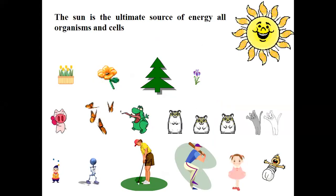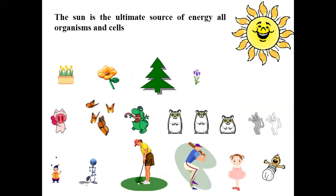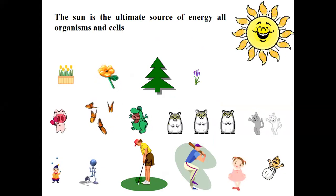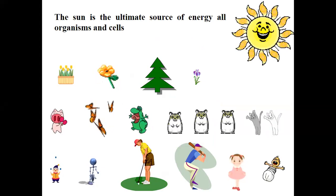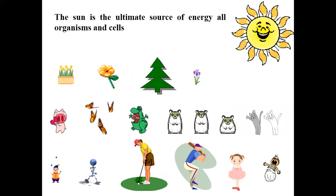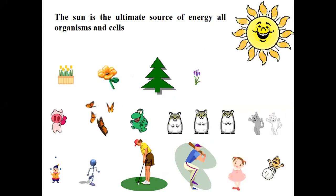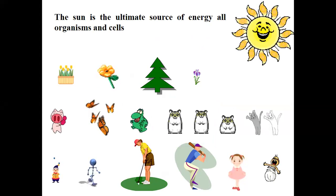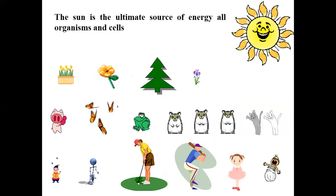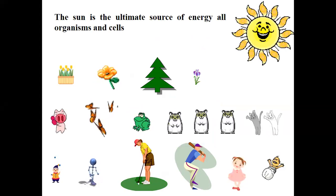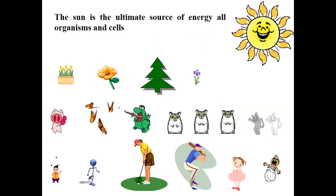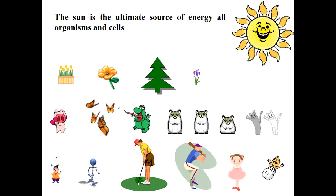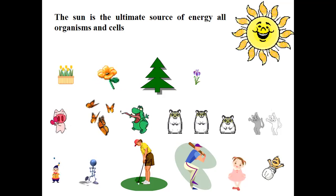The sun is the ultimate source of energy and all organisms and cells just obtain energy from the sun. This energy from the sun is converted into ATP, adenosine triphosphate, and then used by the cell. Mitochondria helps to generate ATP, ADP, NAD, and NADH.